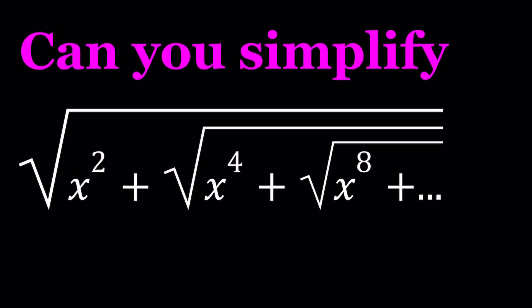Hello everyone, in this video we're going to be simplifying an infinite radical expression. We have the square root of x squared plus the square root of x to the 4th power plus the square root of x to the 8th power. Every time the power is doubled, you go from 2nd to 4th to 8th to 16th and so on and so forth. This goes on forever and we're supposed to simplify this expression.